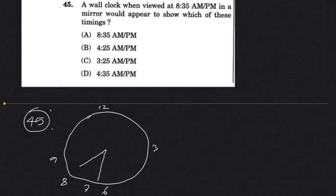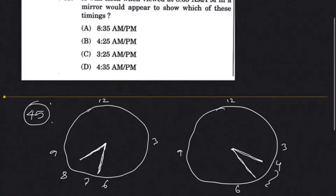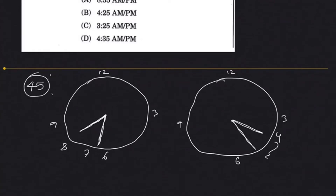In order to find the mirror image of the clock showing 8:35, we look at what the reflection shows. After drawing it out, you'll get an image like this, and based on the options, the answer will be B — 4:25.